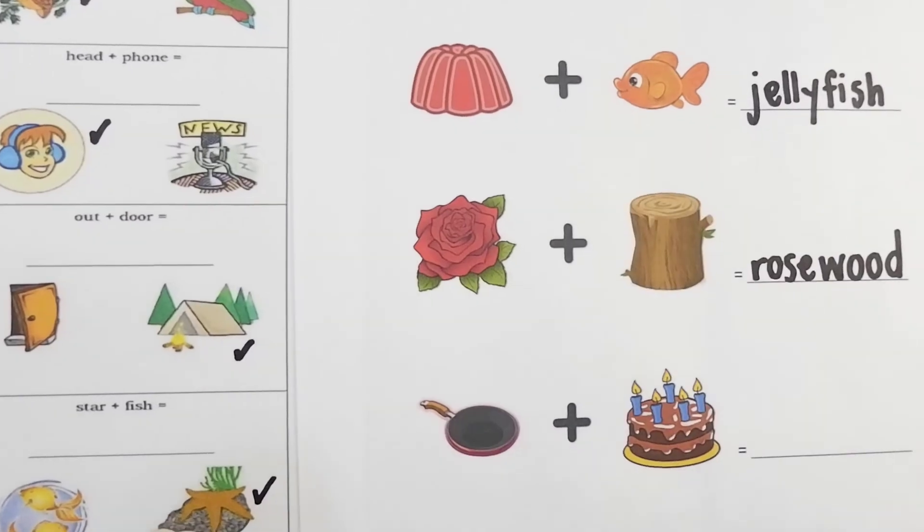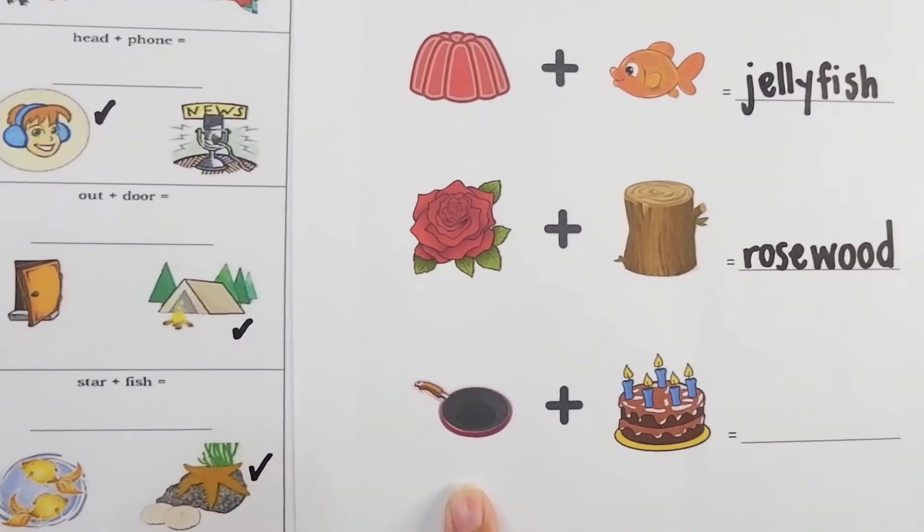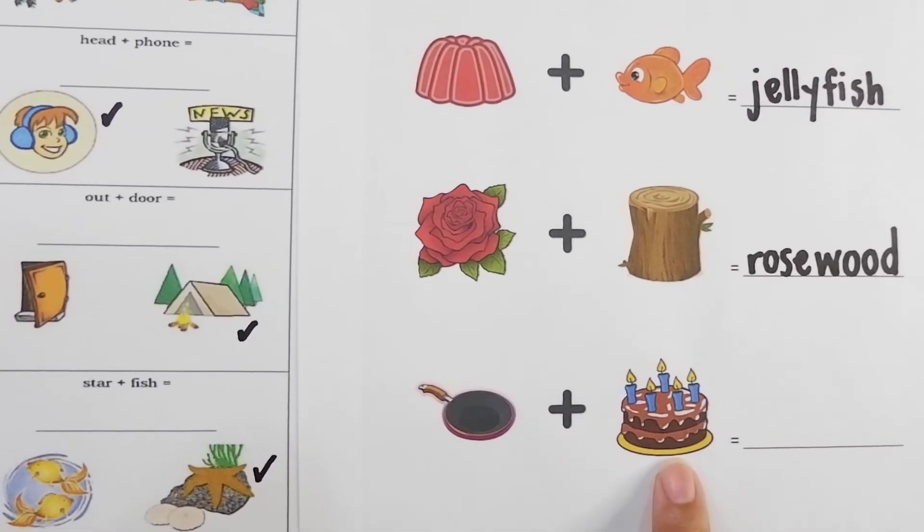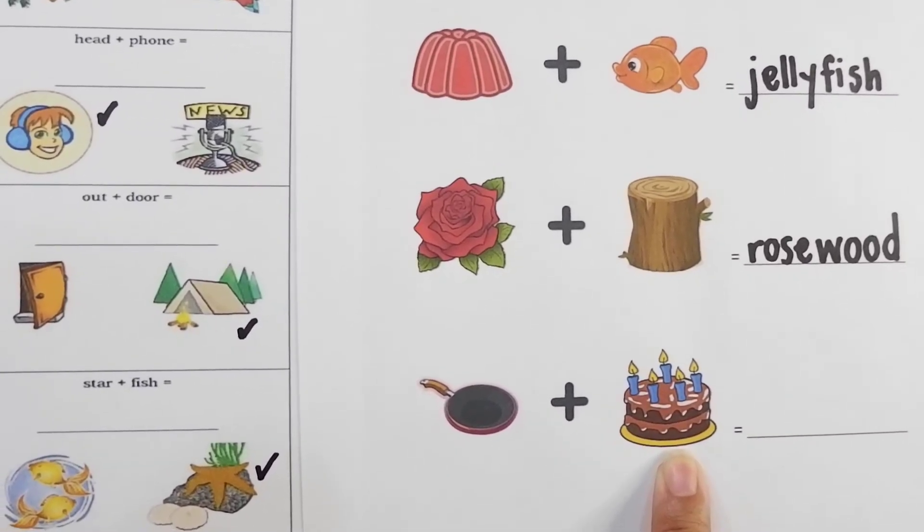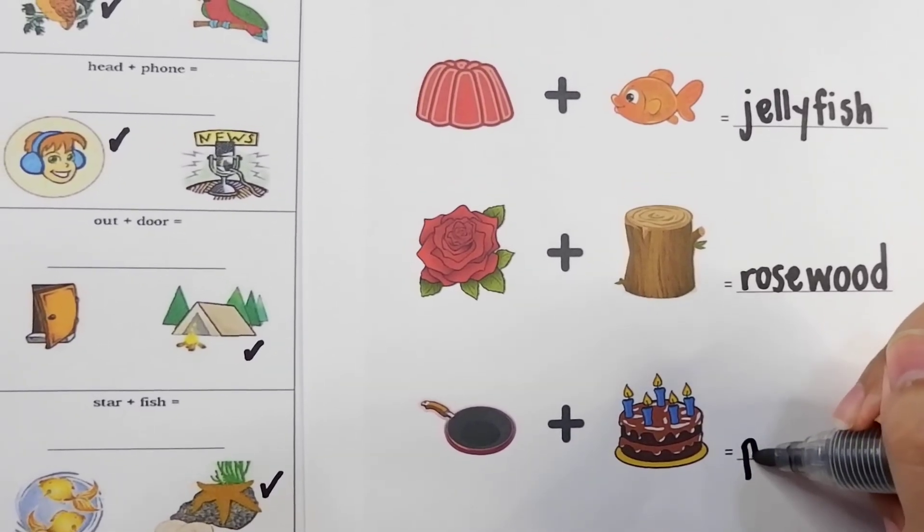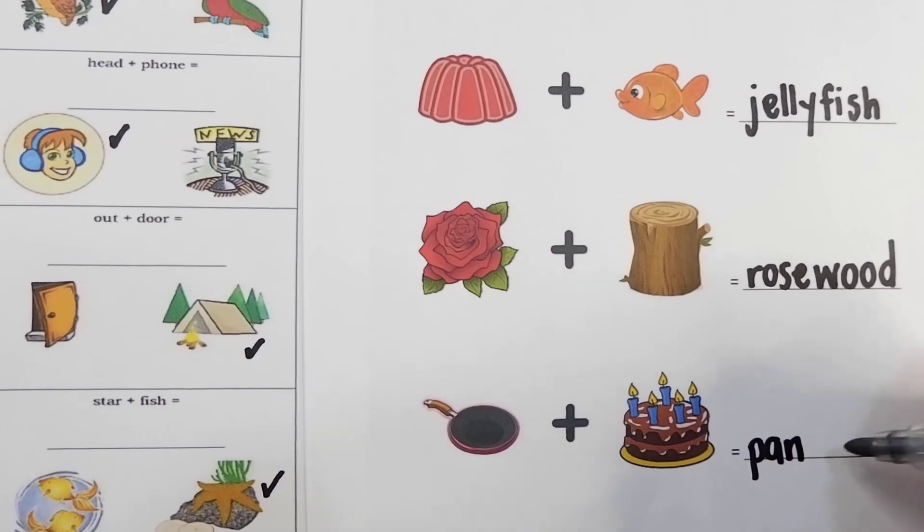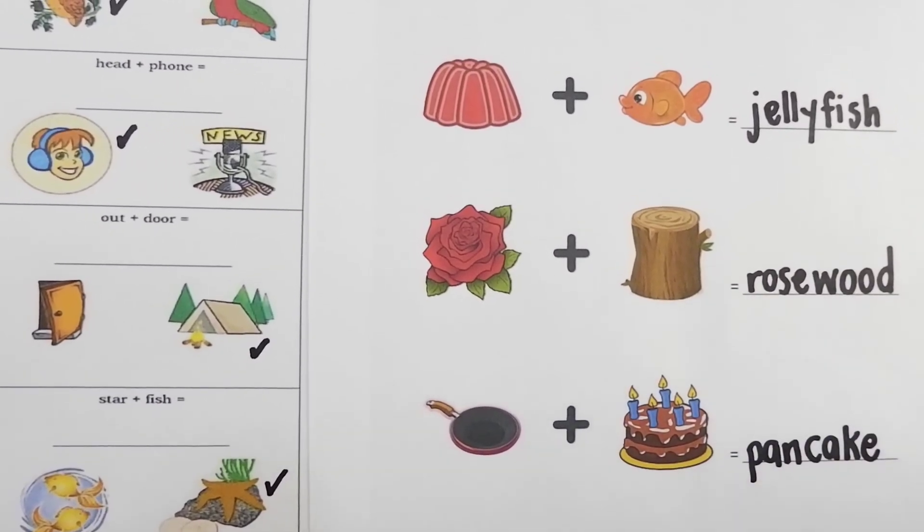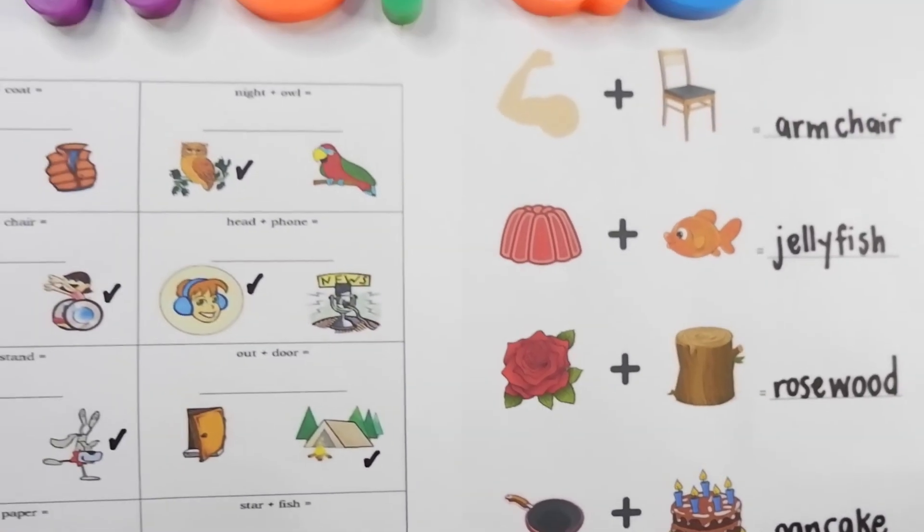Let's do the last example over here. We have pan plus cake. Oh this one is really yummy. Do you know what it is chameleons? It's pancake. Pancakes. I love pancakes.